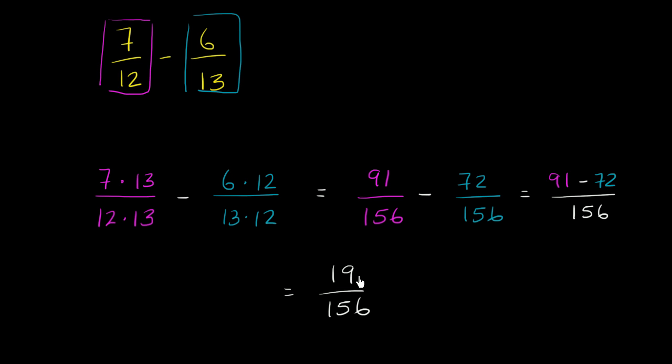And as far as I can tell, let's see, 19 does not go into 156. Let me just make sure of that, that somehow, magically, 156 isn't a multiple of 19 so I could simplify this. So let's see, 19 is almost 20. So maybe, let's see if it'll go 7 times. 7 times 9 is 63. 7 times 1 is 7, plus 6 is 13. Let's see the difference here. Actually, I could have gone in one more time.